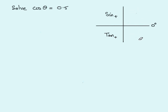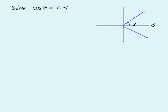When you draw a quadrant diagram, the first thing you do is ask yourself where is the trig function — in this case cosine — positive. It is positive in the first quadrant and in the fourth quadrant. Then you mark in two lines that are exactly the same size angle, equally inclined to the horizontal line.